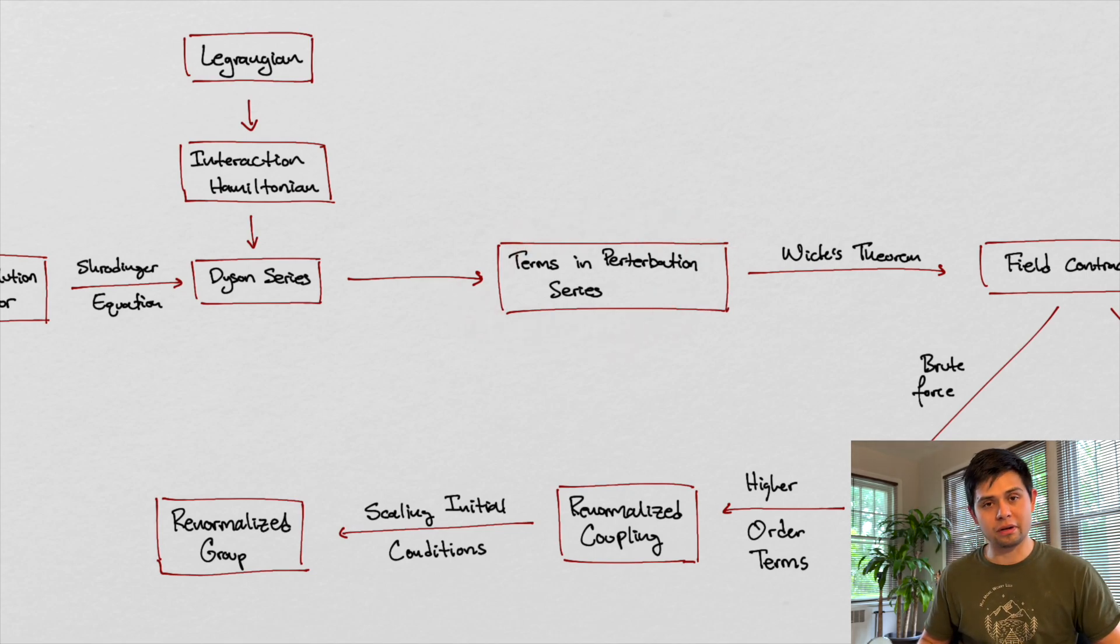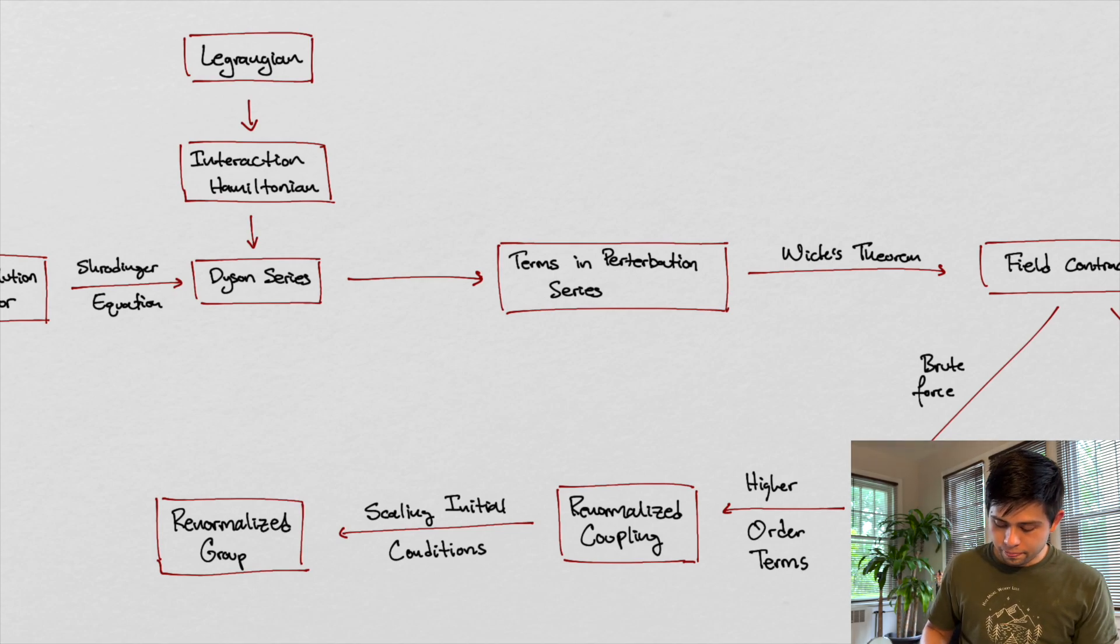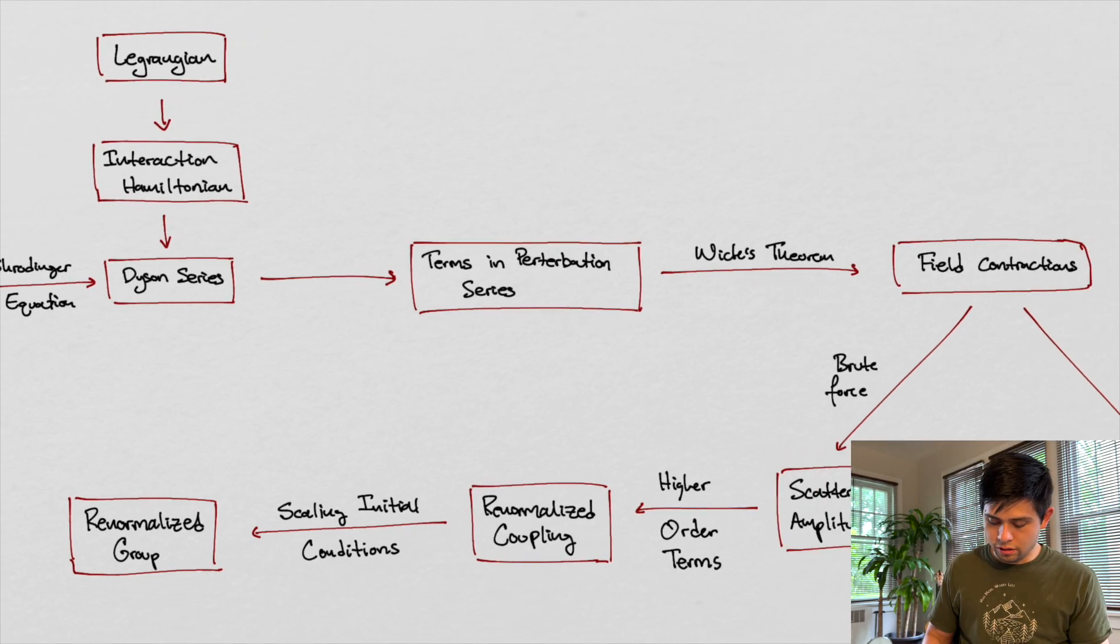it'll help us get terms in a perturbation series. The terms in a perturbation series, if you remember a couple videos ago, the Dyson series, again, is one plus the integral of the interaction Hamiltonian, plus the integral of two of the interaction Hamiltonians, plus three, plus four, and so on. And each one of those pieces to the Dyson series was important and instrumental in calculating amplitudes, scattering amplitudes.